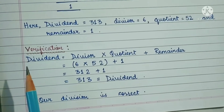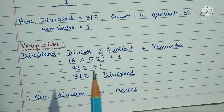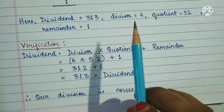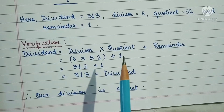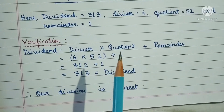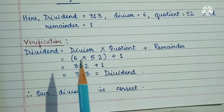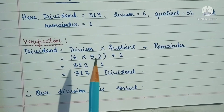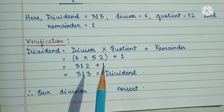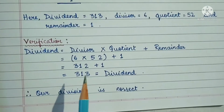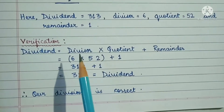So let's check. We know dividend must equal divisor × quotient + remainder. Our divisor is 6, our quotient is 52, and our remainder is 1. Be careful — first we multiply the divisor by the quotient: 6 × 52 = 312. Then we add the remainder: 312 + 1 = 313.